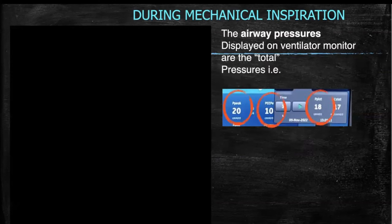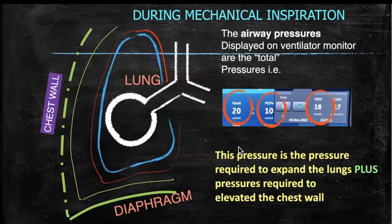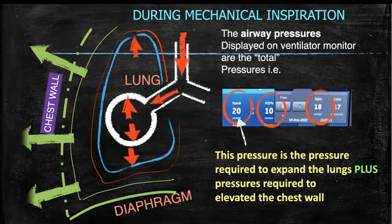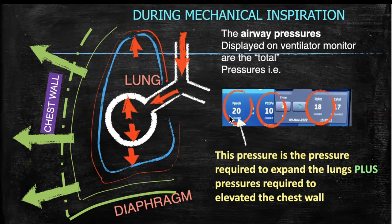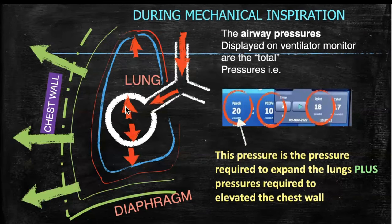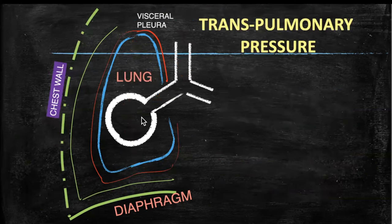We have certain numbers: peak pressure, positive end-expiratory pressure, and plateau pressures. The plateau pressure and peak pressure are required to expand the lung as well as the chest wall — not only the lungs. These pressures expand both the lungs and the chest wall, and that is important to understand.